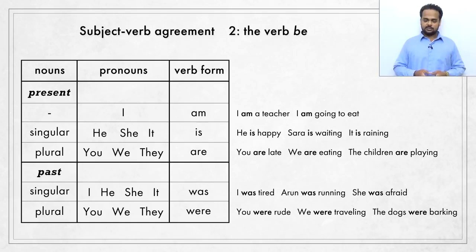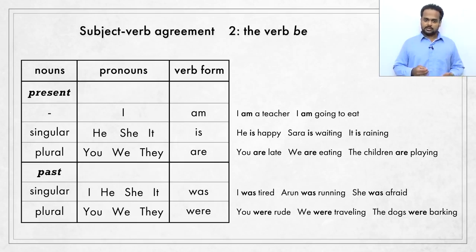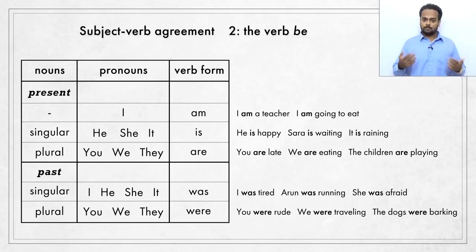In the present, if the subject is I, we say 'am': 'I am a teacher,' 'I am going to eat.' If the subject is a singular noun or one of the pronouns he, she, or it, we use 'is': 'He is happy,' 'Sarah is waiting,' 'It is raining.' And if the subject is a plural or one of the pronouns you, we, or they, we use 'are': 'You are late,' 'We are eating,' 'The children are playing.'